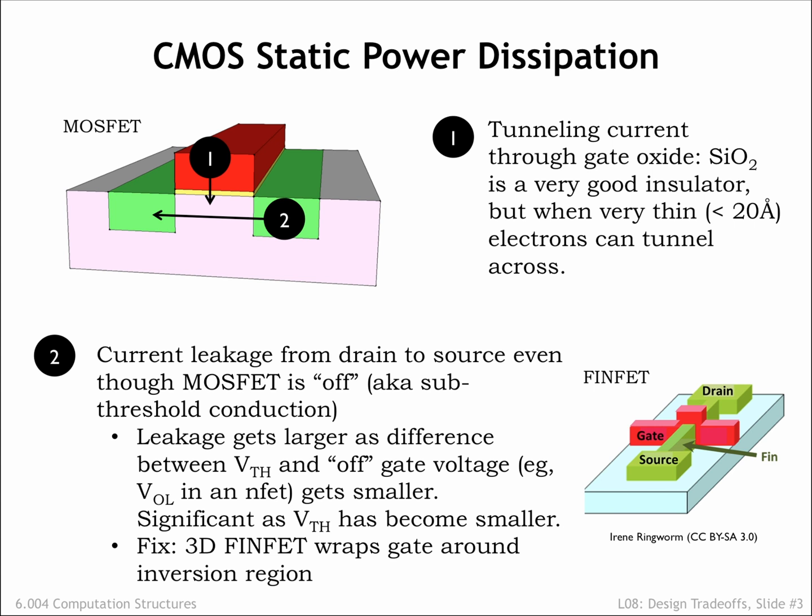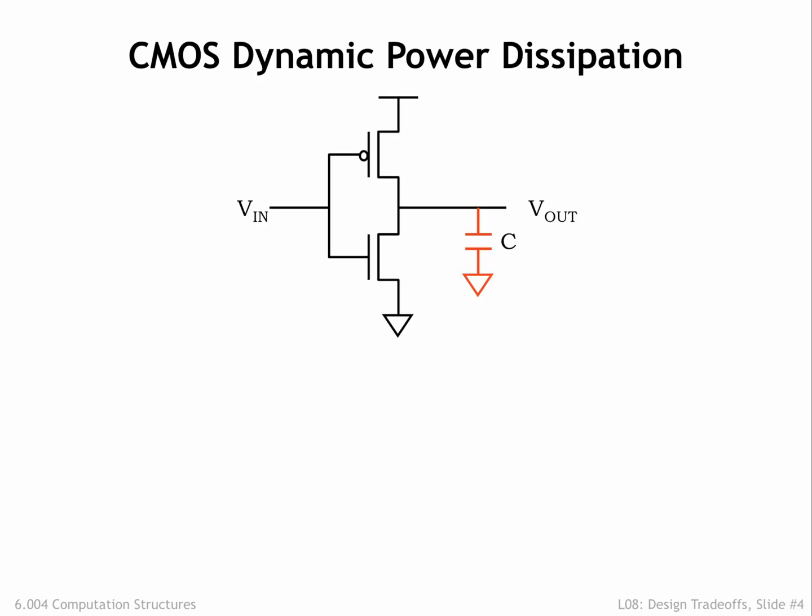Neither of these effects is under the control of the system designer, except of course if they're free to choose an older manufacturing process. We mention them here so that you're aware that newer technologies often bring additional costs that then become part of the trade-off process. A designer does have some control over the dynamic power dissipation of the circuit — the amount of power spent causing the nodes to change value during a sequence of computations. Each time a node changes from 0 to 1 or 1 to 0, currents flow through the MOSFET pull-up and pull-down networks, charging and discharging the output node's capacitance and thus changing its voltage.